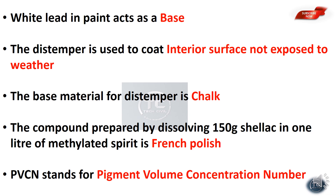The compound prepared by dissolving 150g of shellac in 1 litre of methylated spirit is called French polish. PVC stands for Pigment Volume Concentration — this is the full form of PVC in the context of paints.